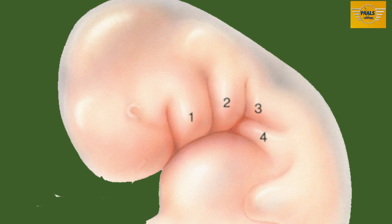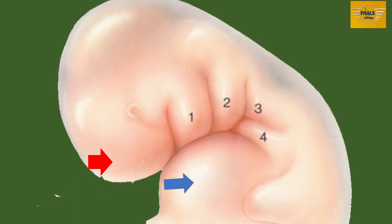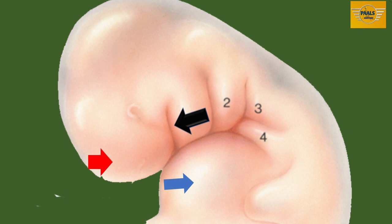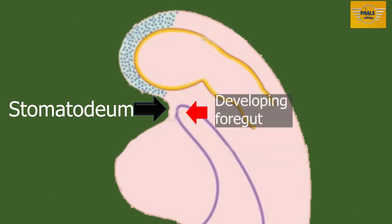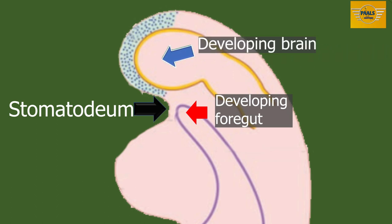At this stage, after the formation of the head fold, two prominent bulgings are seen on the ventral aspect of the developing embryo: the prominence of the developing brain superiorly, and the pericardium placed inferiorly. Between these two prominences, we see a groove called the stomatodeum. Deep to this stomatodeum is the developing foregut, while within the pericardium is the developing heart.